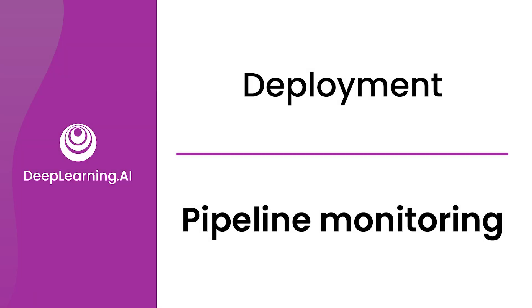Many AI systems are not just a single machine learning model running a prediction service, but instead involve a pipeline of multiple steps. So what are machine learning pipelines, and how do you build monitoring systems for that? Let's learn about that in this video.